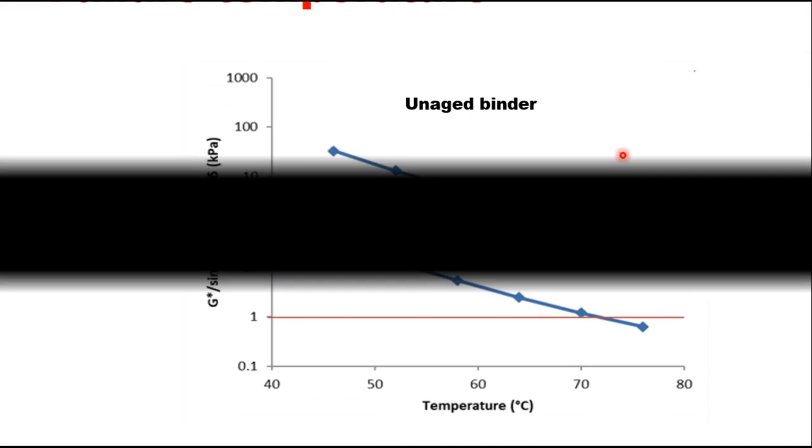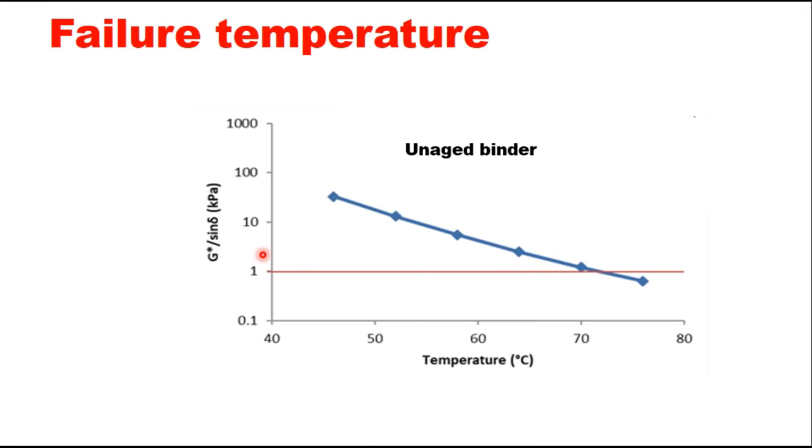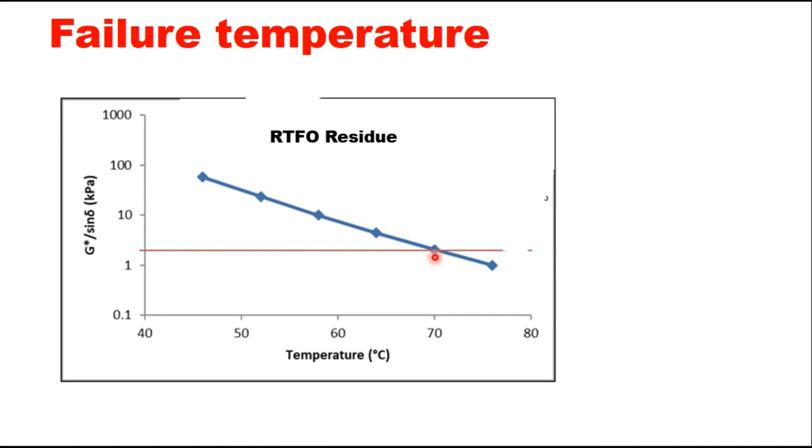So at the end of the test, you get values of G*/sin(δ) at different temperatures. You make a plot and find out the temperature at 1 kPa for unaged binder, and similarly corresponding to 2.2 kPa for RTFO. The lower of these two temperatures is the failure temperature and that is considered as the highest temperature for PG grading.